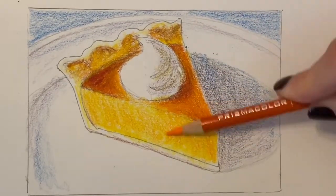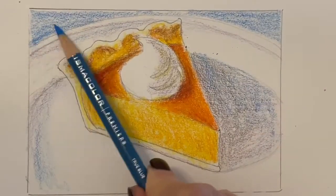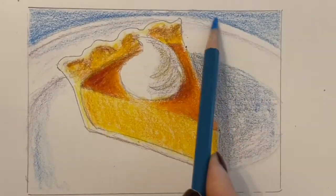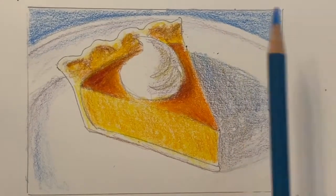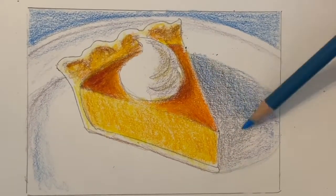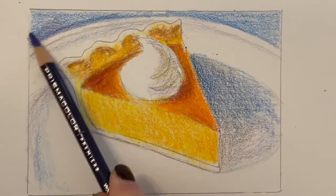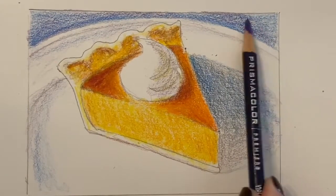As I layer my colors I just want to make sure that the inside of my pie remains a lighter yellow orange color and that it's darker along the top and as I work I want to cover up the paper as much as possible in the areas that should be darker so that it looks more finished.